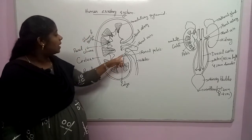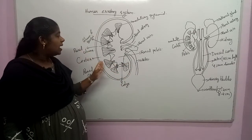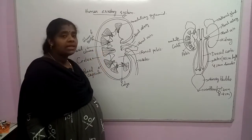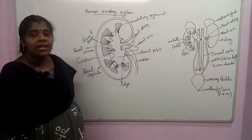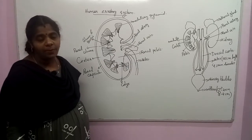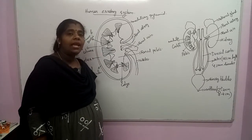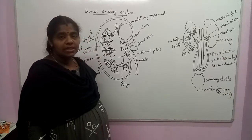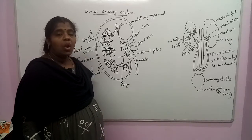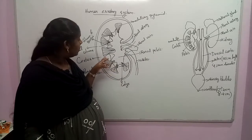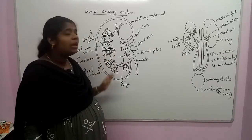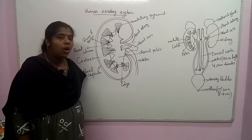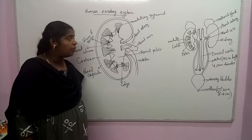The capsule-like structure consists of two regions: cortex, which is the outer portion, and medulla, which is the inner portion. The medulla is divided into small chambers called medullary pyramids. These pyramids enter the renal pelvis through projections called calyces. The cortex forms columns between the medulla called renal columns, which extend as columns of Bertin.